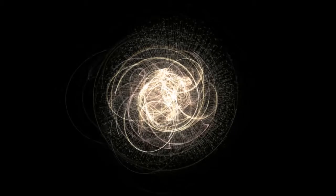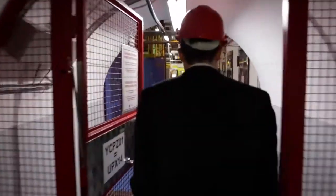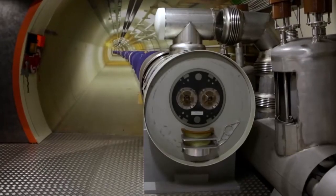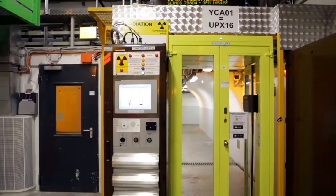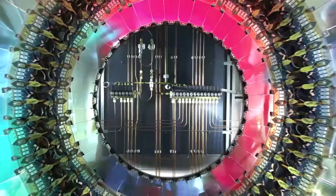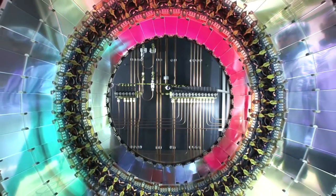One example of this is the Higgs boson that was found here a couple of years ago. The instruments required to do this, the scientific instruments we call particle accelerators. The particle accelerator we have at CERN right now is the Large Hadron Collider. It's the largest and most complex machine ever built by mankind. It consists of something like 100 million components put together underground here outside Geneva in Switzerland.